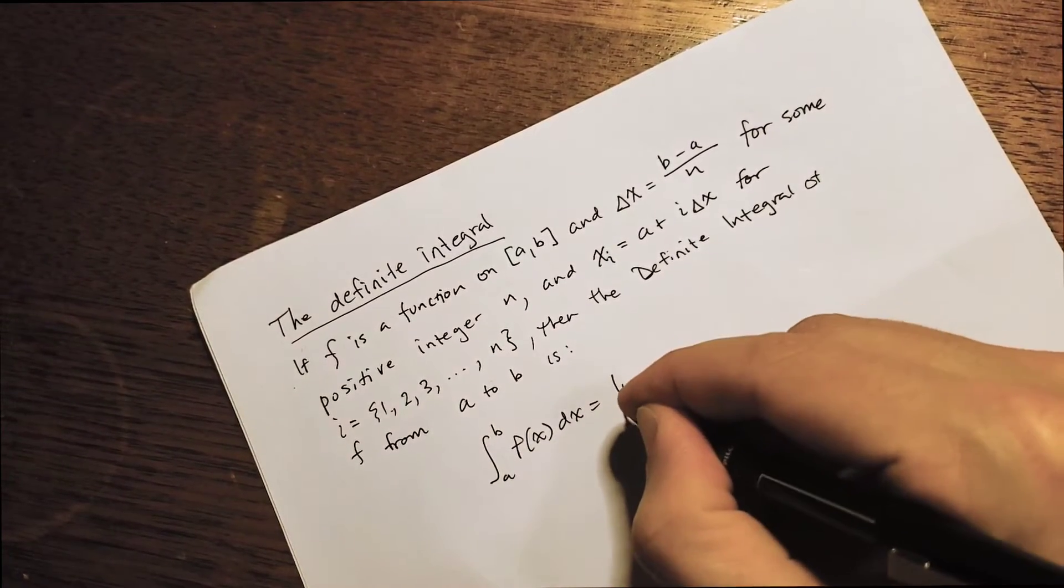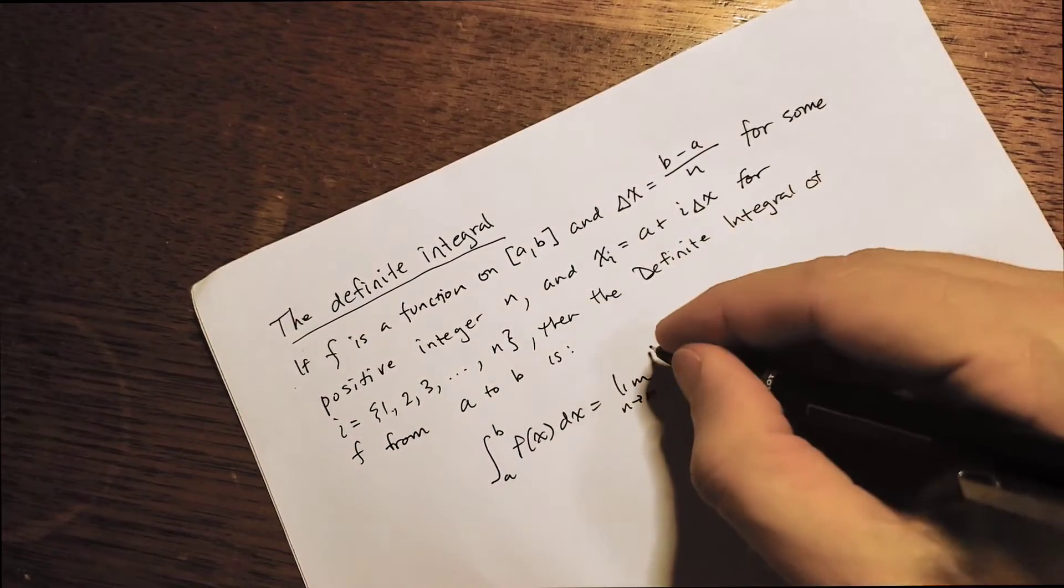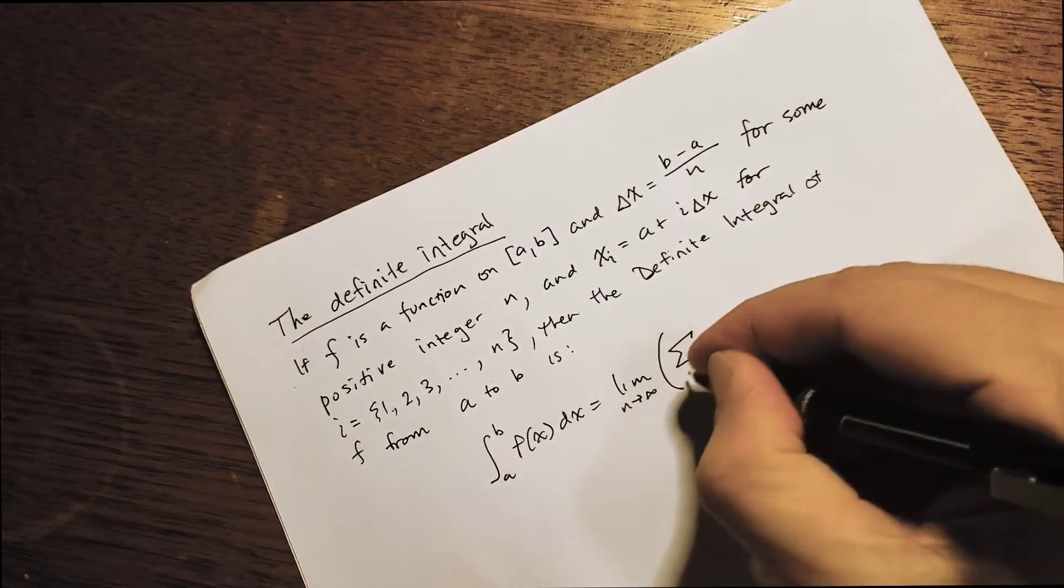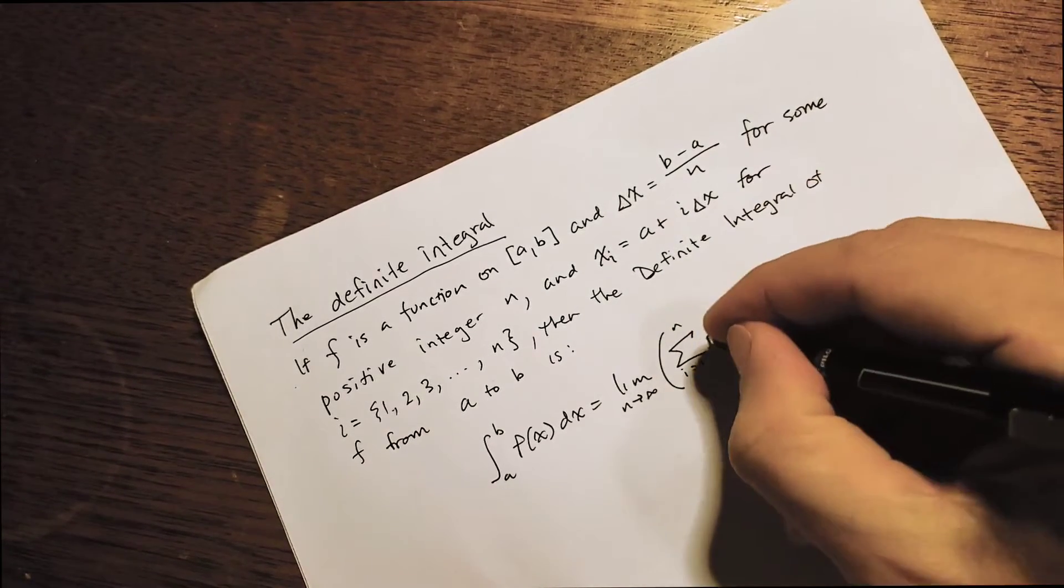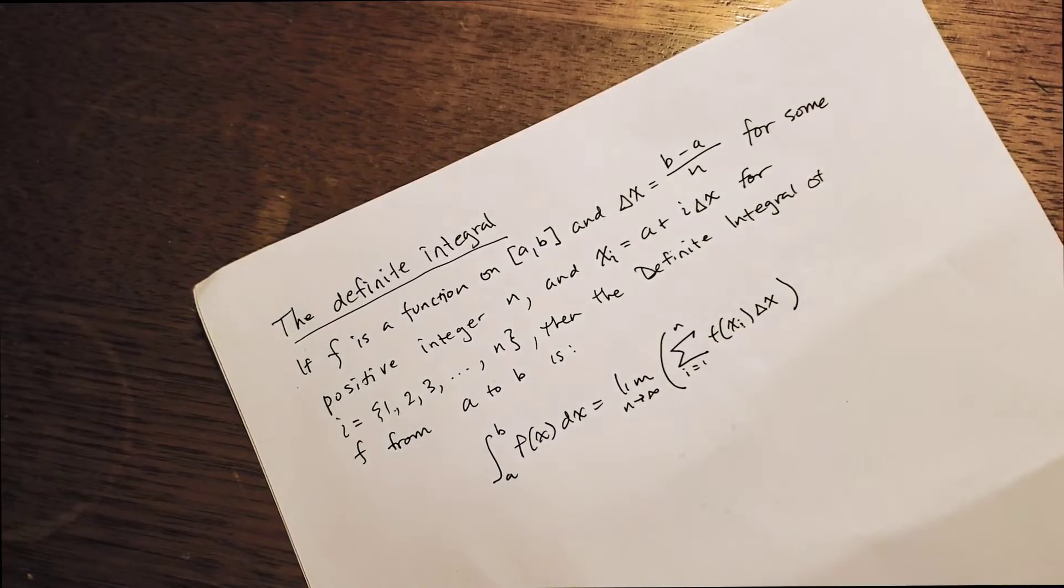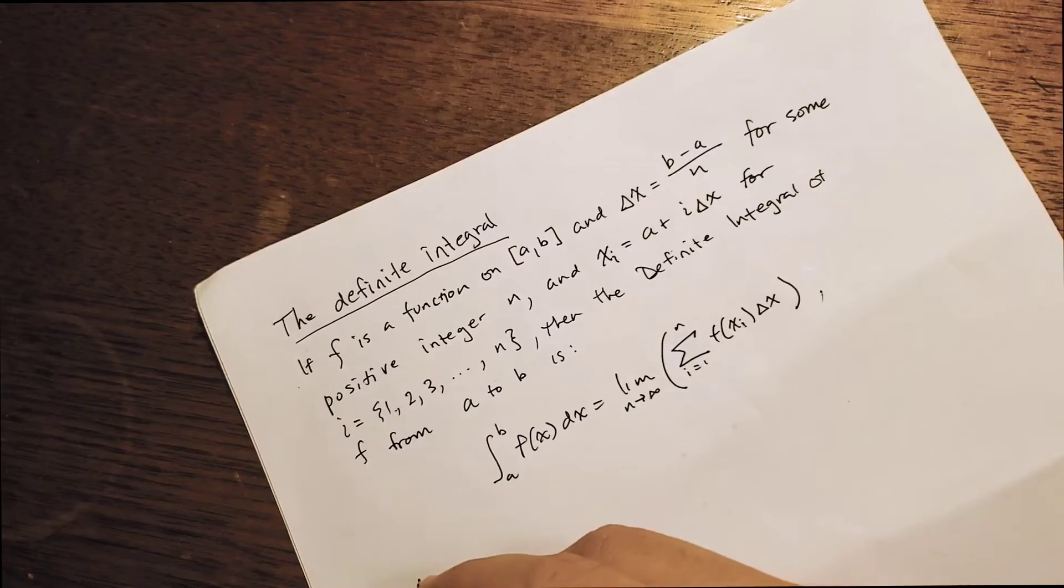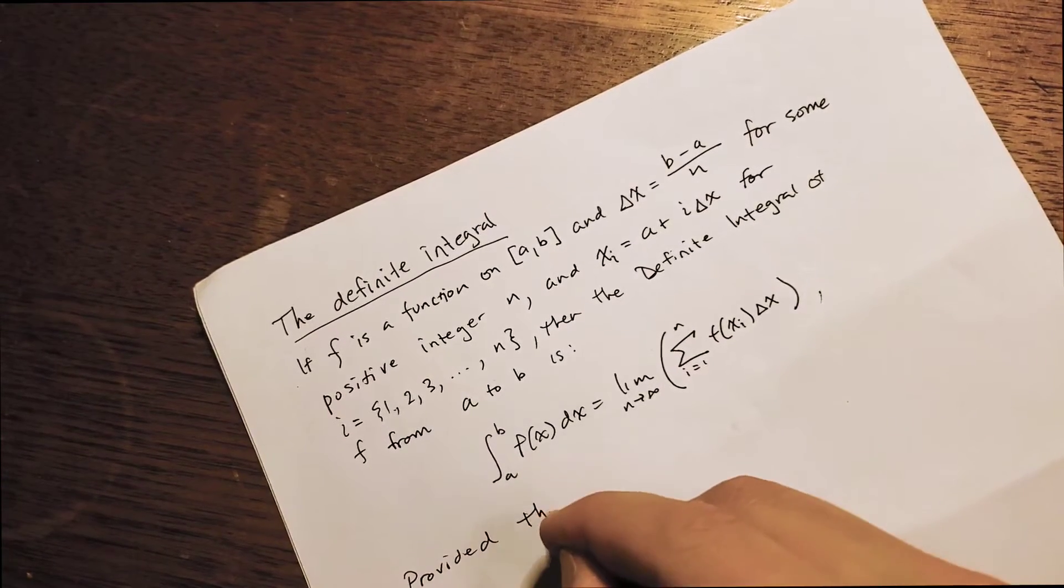And the definition is just the limit as we make more and more approximating rectangles. And then here is our sum over those rectangles that we were using to approximate. This was our construction. So all of this, of course, only makes sense,